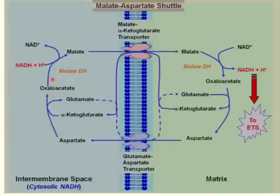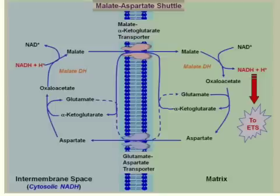Starting with NADH, it will combine with oxaloacetate and donate its hydrogens to oxaloacetate, forming malate and reforming NAD. The malate can go through the malate alpha-ketoglutarate transporter. Malate dehydrogenase can catalyze this reaction forward and backwards depending on concentration. With a high concentration of oxaloacetate and NADH, it drives the reaction to malate and NAD, going into the membrane where we end up with a high concentration of malate and NAD.